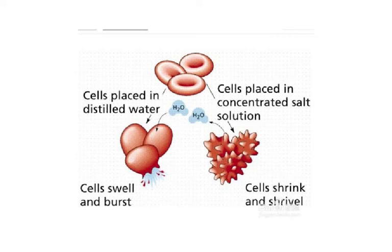Another diagram shows what happens when cells are placed in distilled water — they swell and burst — and when placed in a concentrated salt solution, the cells shrink and shrivel. The shrunken state is called crenation.